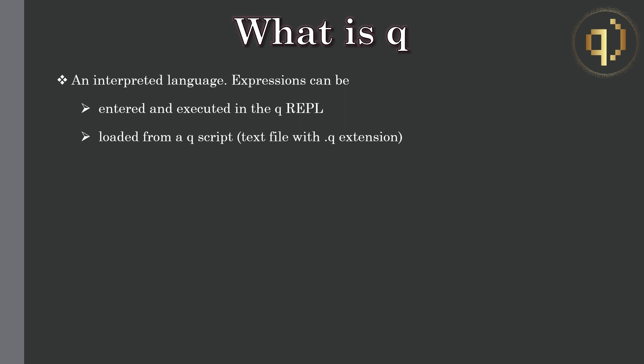Development speed in Q is fast, not only because the language syntax is terse, but also because Q is an interpreted language. Expressions can be executed in a REPL giving instant feedback to the developer — i.e., there's no waiting for compilation.